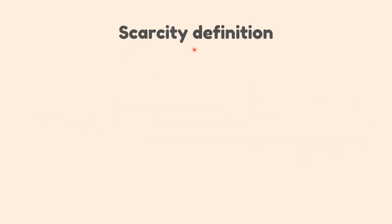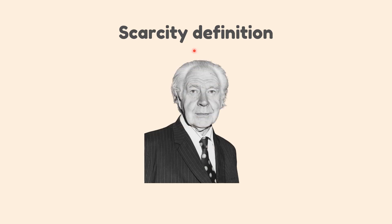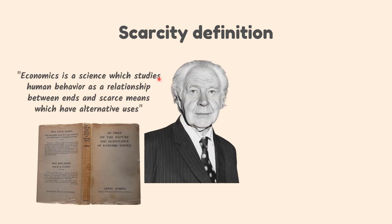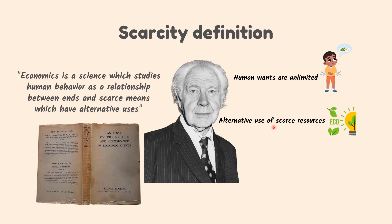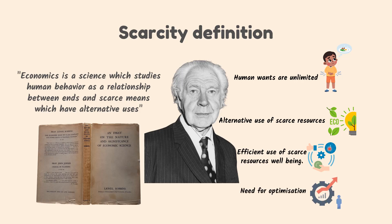The third is the scarcity definition, put forward by Robbins. According to him, economics is a science that studies human behavior as a relationship between ends and scarce means which have alternative uses. The features of this definition are: human wants are unlimited; alternative use of scarce resources; efficient use of scarce resources; and the need for optimization.